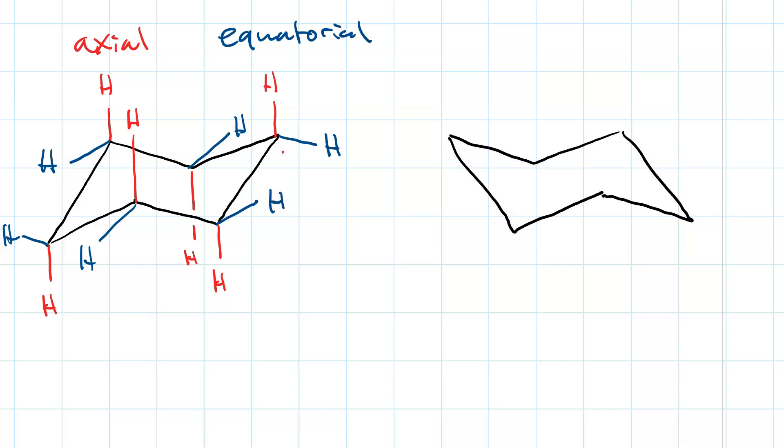So, you can see the rightmost carbon that was my headrest is now my footrest. The leftmost carbon that was my footrest is now my headrest. This hydrogen here that's now up axial is this hydrogen here that was up equatorial before. This hydrogen here that was down equatorial is now down axial over here.